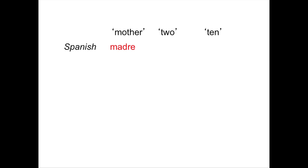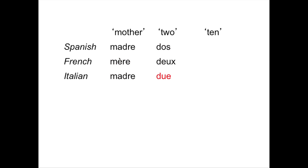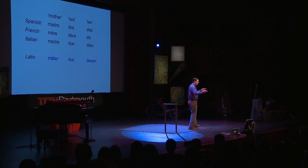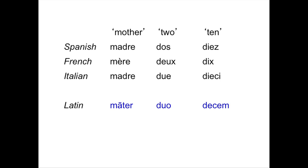If we look at words meaning 'mother' in Spanish: madre, French: mère, Italian: madre; 'two': dos, deux, and due; 'ten': diez, dix, and dieci. You don't have to be particularly bright to look at these and say these languages do look similar. We know why — they are descended from the language of the Romans, hence Romance languages, namely Latin.